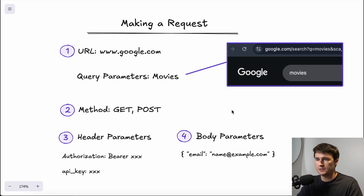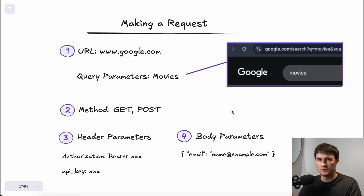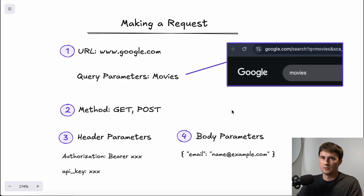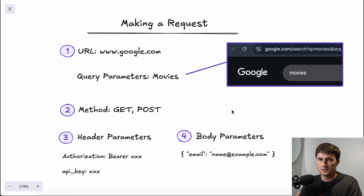The last piece is body parameters. The body only exists for POST requests and contains information sent to the server. For example, if you're using a form submission that takes someone's email, the body parameter would be a key-value pair including the person's email.